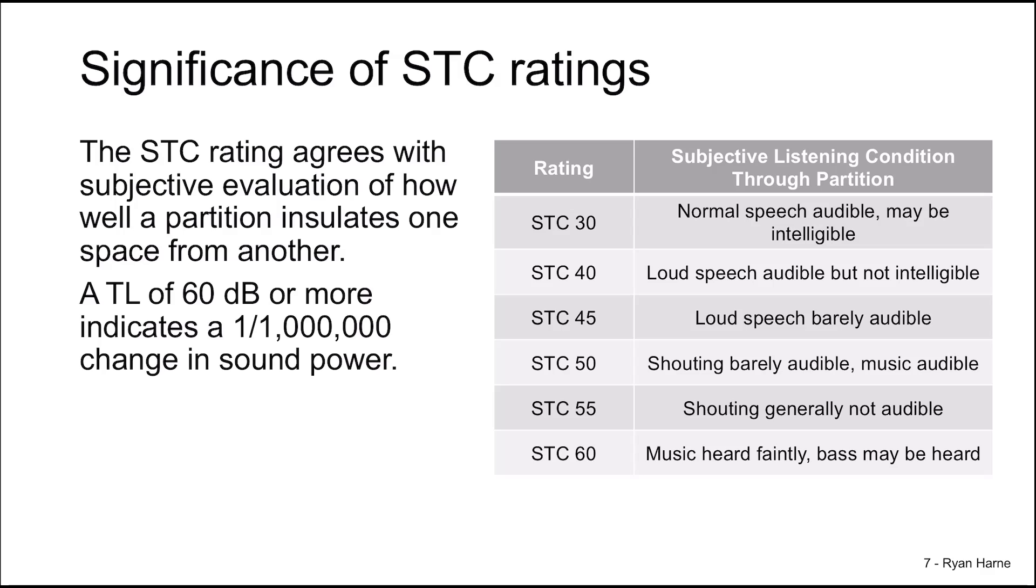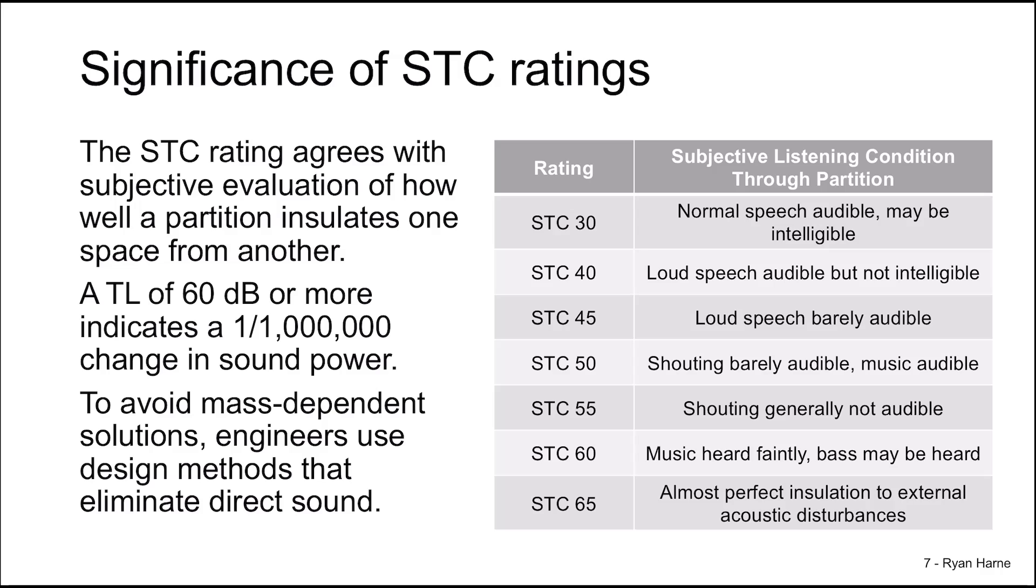So for an STC of 60, this means that on average, or so to speak, around one one-millionth of the power is getting through. So to increase STC even further requires an extraordinary enhancement of performance. STC 65 is almost perfect insulation between rooms of almost any disturbance. To avoid a totally mass-dependent solution, engineers use this characterization of subjective evaluation to find clever ways to eliminate direct sound paths without excessive use of mass.